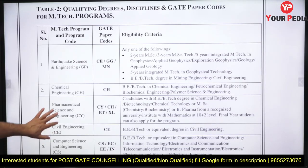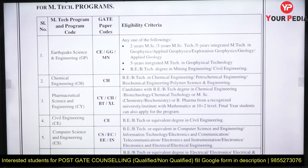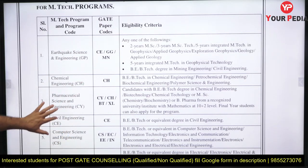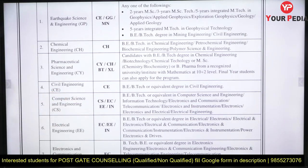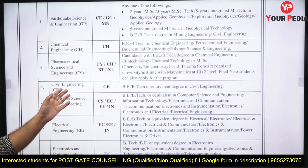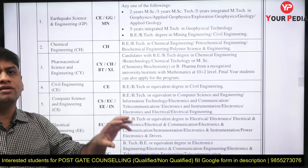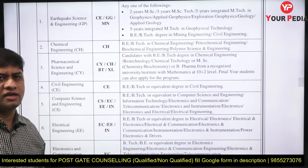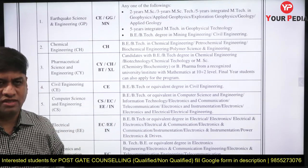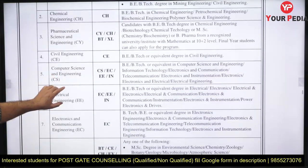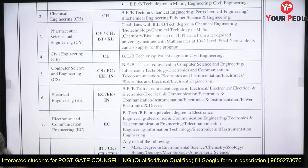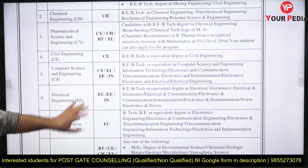Now let us come to requirements per program. For Earthquake Science and Engineering, you need a GATE paper in either Civil Engineering, or the GG and MN codes. For Chemical Engineering, only chemical engineering students can apply. For Civil Engineering, only civil engineers can apply. If you are a B-Tech in Computer Science but wrote the Civil Engineering GATE paper, they will not allow you — though such cases are rare. Normally it is the reverse: a civil engineer writing in Computer Science, which the CS department may permit.